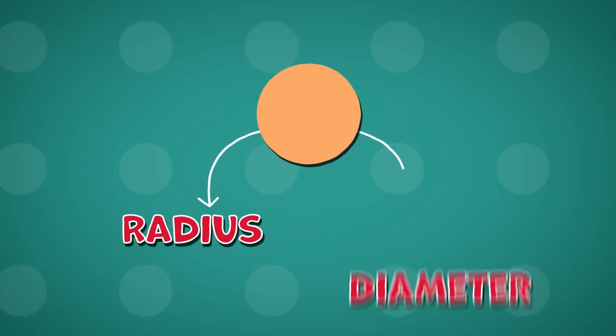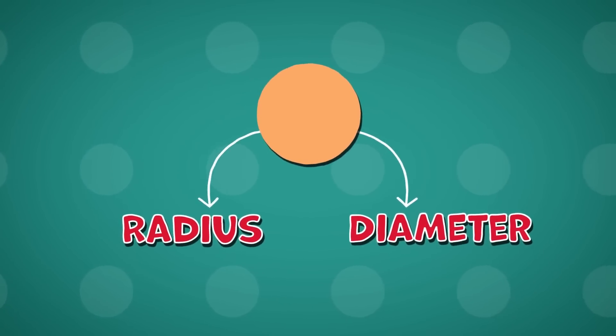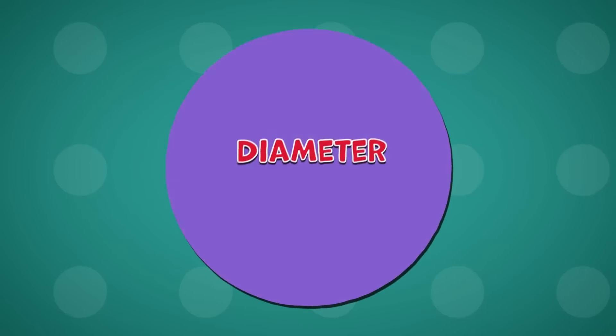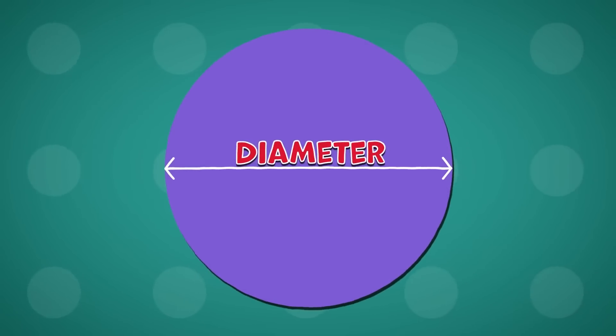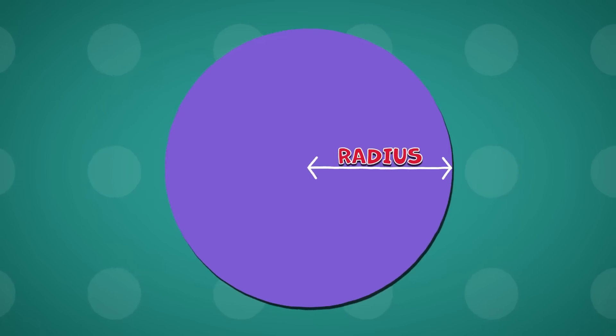Fact number three: Radius and diameter are two important measurements in a circle. The diameter is the longest straight line through a circle. The radius is half of this.